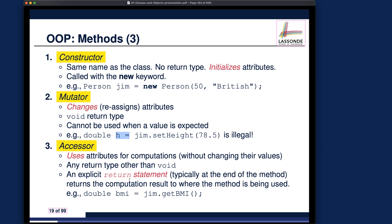If you want to use the method call as an expression, you should use an accessor call. For example, jim.getBMI will presumably return a double value, and you can assign that double value to some double variable. That's the distinction you have to make between mutators and accessors.